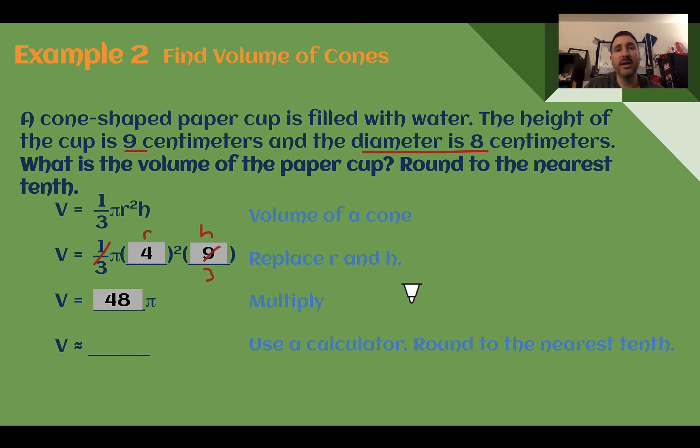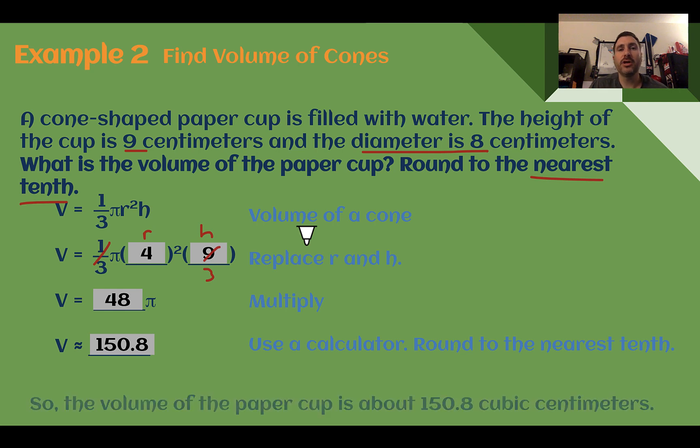Now am I multiplying it out or keeping my pi symbol? Rounding to the nearest tenth tells me I'm multiplying it out. So using a calculator, I can do 48 times pi and get 150.8. So the volume of this paper cup would be about 150.8 cubic centimeters. Or they might ask this cone could hold 150.8 cubic centimeters of water.